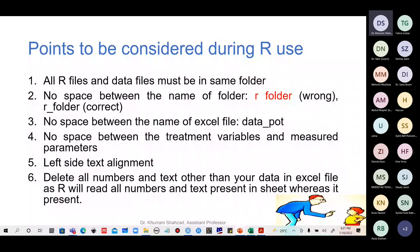Delete all other text except your data in the table. If any numbers or text are present somewhere else in your file, R will read those and give you errors. Your data file must be clean — it should contain only data, nothing else. No space in folder name, no space in file name, no space between treatment variables and measured variables, left-side alignment, and delete all other text. R is simple, but your data file arrangement is very important. If the data file is not properly arranged, R cannot do anything.